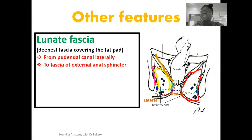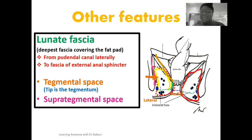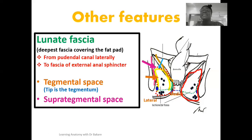The lunate fascia also further subdivides the ischioanal fossa into two sub-regions: the tegmental space, which is the space within the lunate fascia, and the suprategmental space, which is the space located outside the lunate fascia. The upper edge of the lunate fascia is referred to as the tegmen, which is like the tip of the lunate fascia.